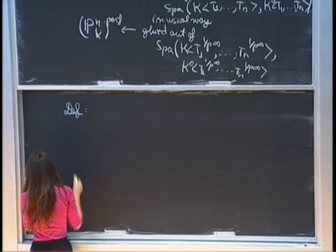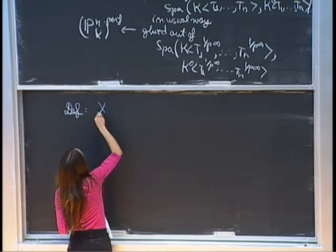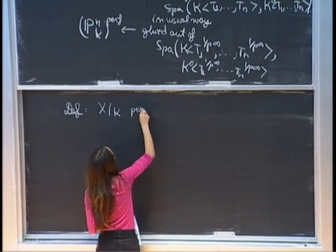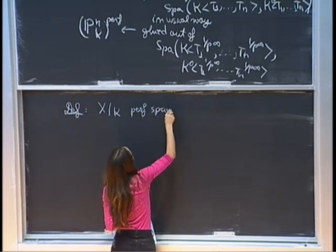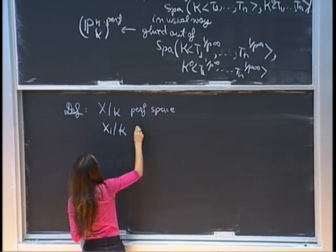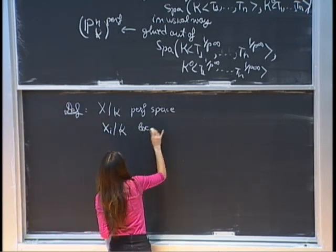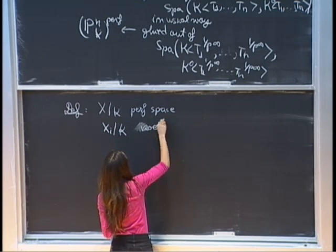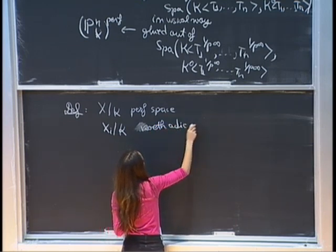Let me make a formal definition. Let x over k be a perfectoid space, and let x_i over k be a filtered inverse system of Noetherian adic spaces.